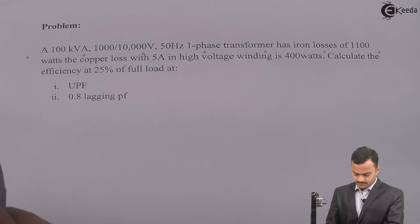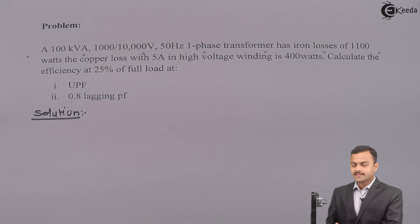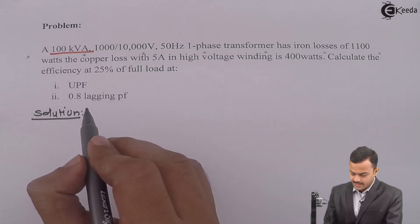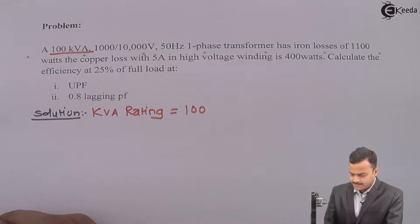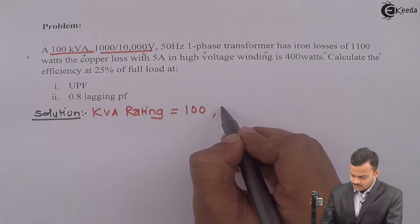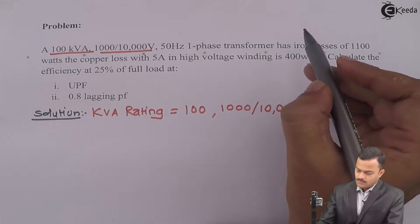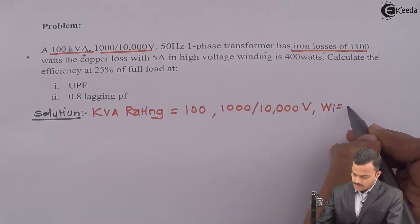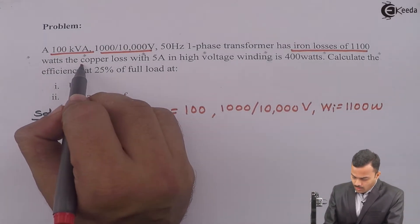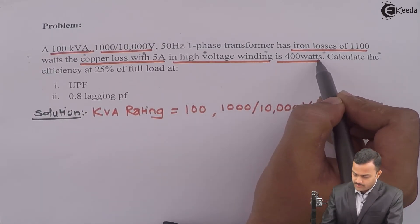Let's solve it. Let's list out the things given. KVA rating of a transformer is 100. EMF ratio 1000/10,000 volt. Iron losses, Wi is 1100 watts and copper loss with 5 ampere in high voltage winding is 400 watts.